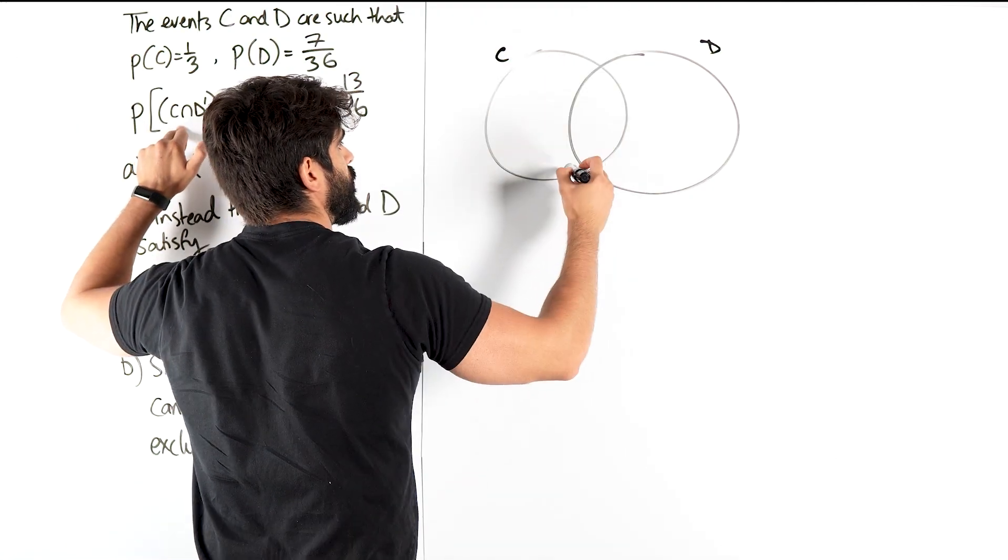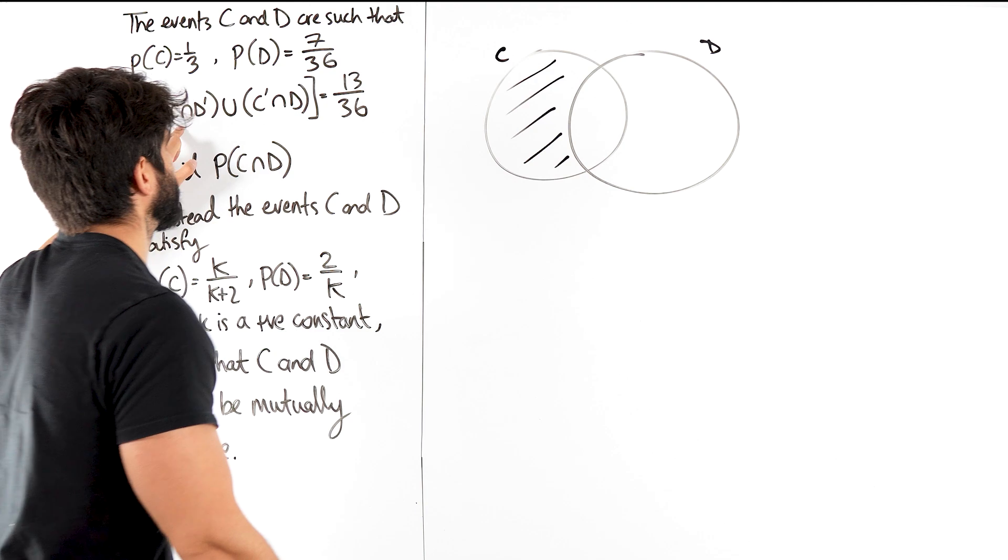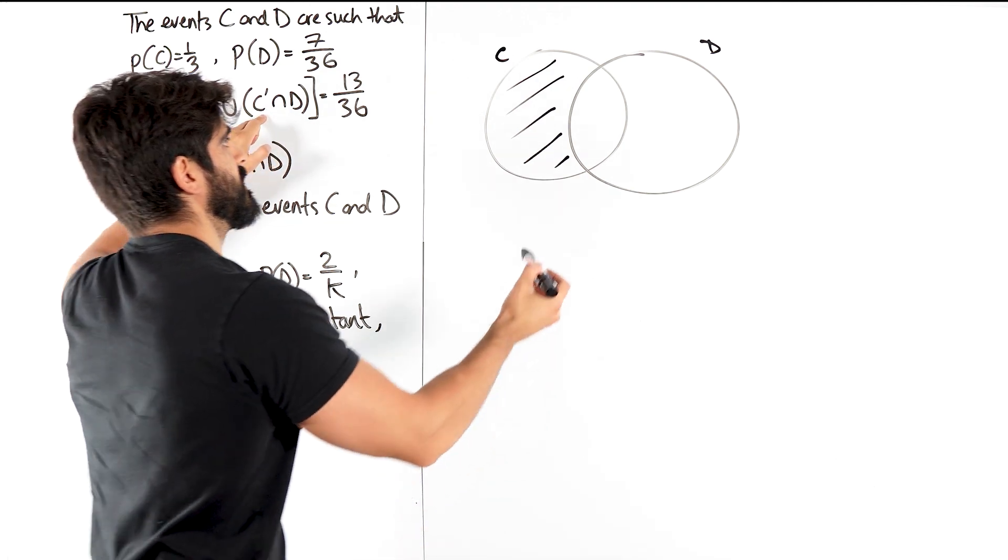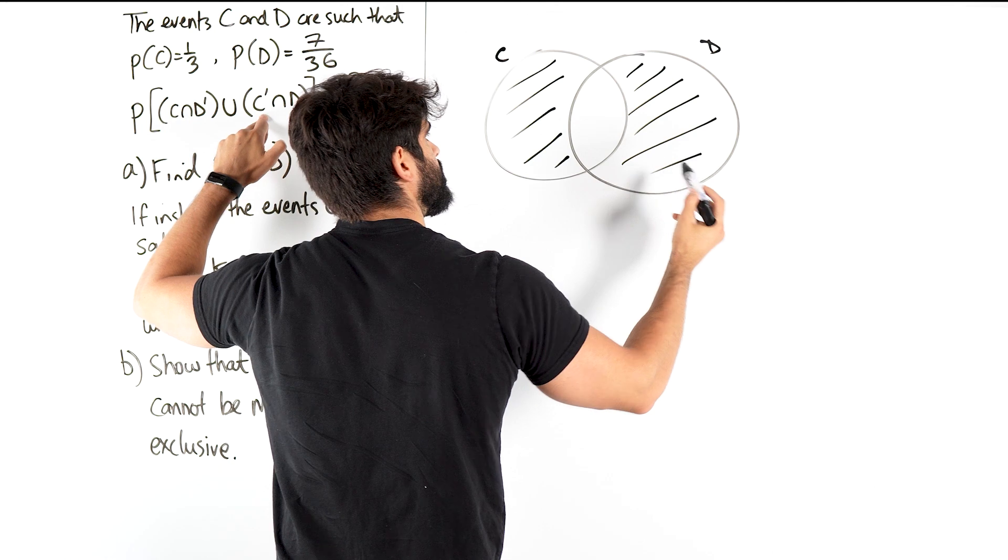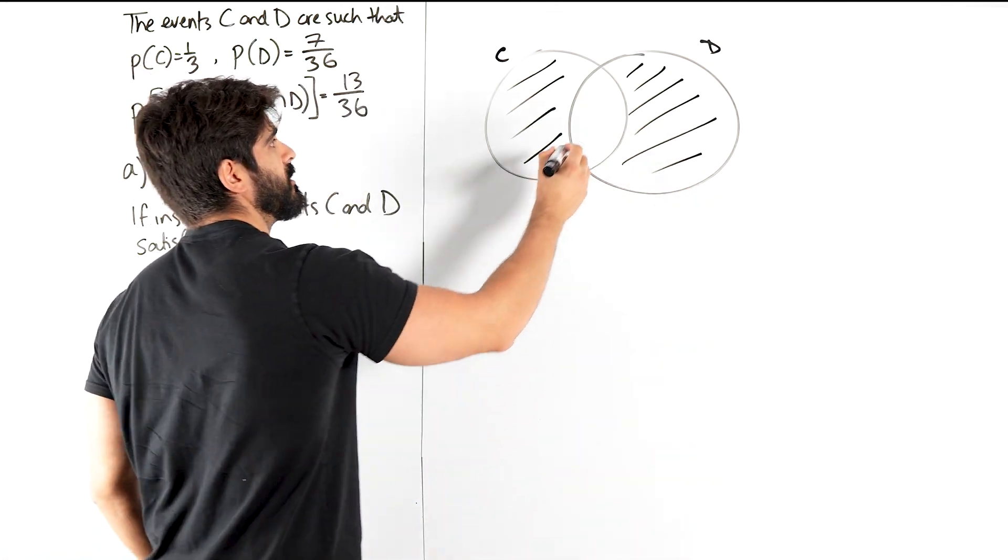So this region here, together with not C and D. Not C and D is this one. So these two together is 13 over 36 and they want us to find the middle.